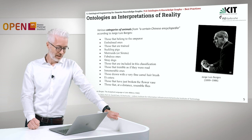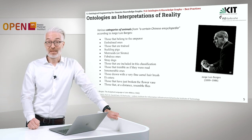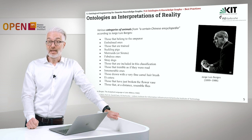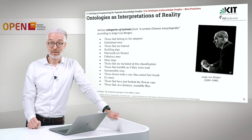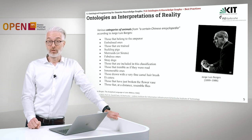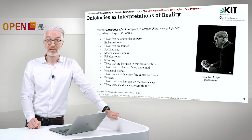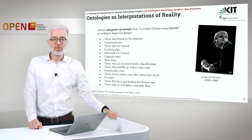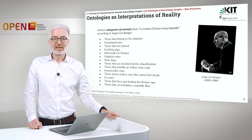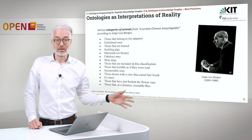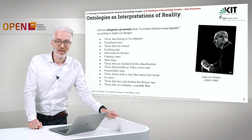In 1942, he wrote 'The Analytical Language of John Wilkins' and gave a very famous example of what can happen if you define an ontology. He described various categories of animals from a certain Chinese encyclopedia, which categorized animals as: those that belong to the emperor, the embalmed ones, those that are trained, suckling pigs, mermaids or sirens, fabulous ones, stray dogs, those included in this classification, those that tremble as if they were mad, innumerable ones, those drawn with a very fine camel hair brush, those that have just broken the flower vase, and those that at a distance resemble flies.